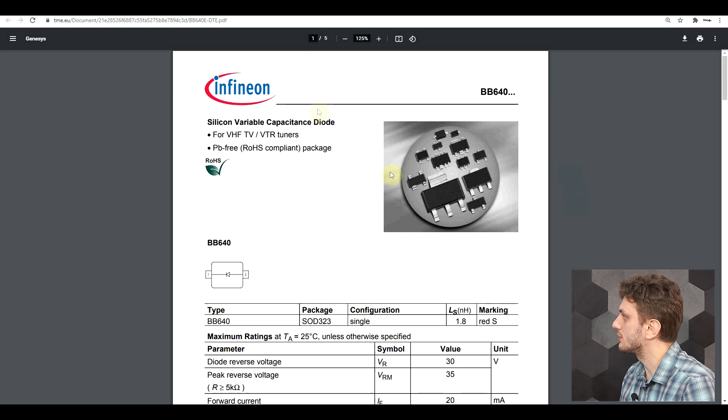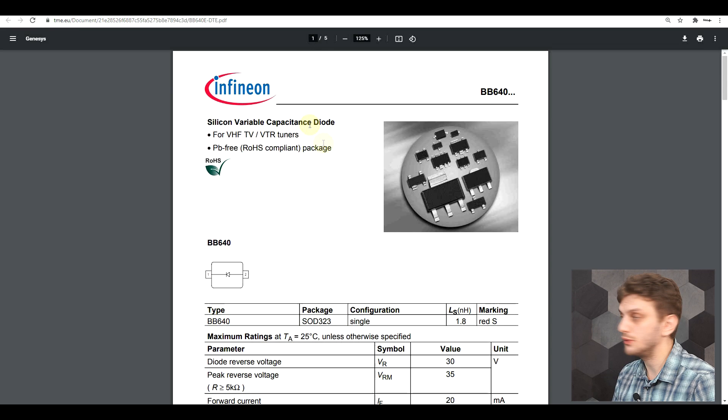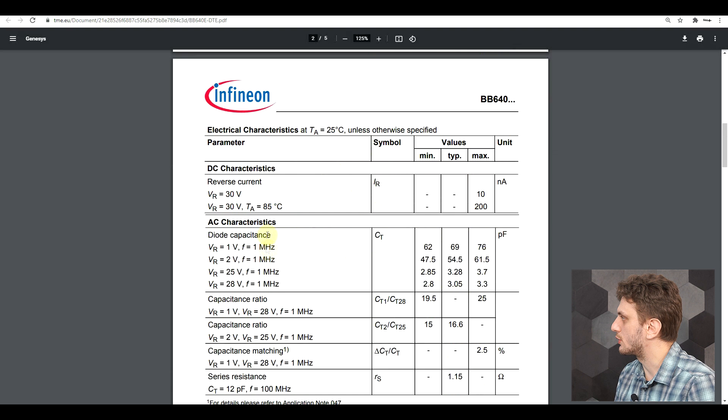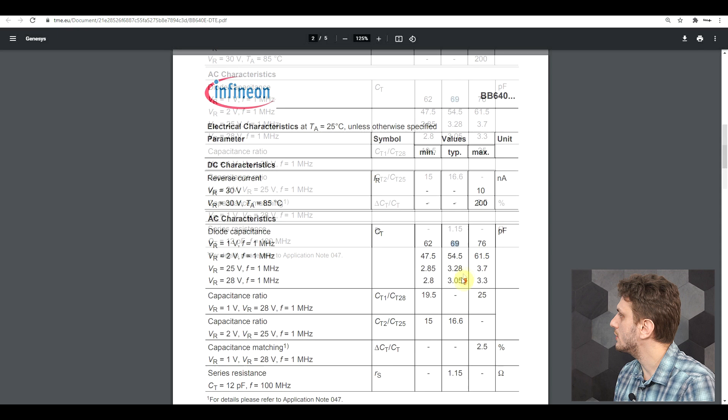Now, if we look into the datasheet of such a component, so what I have here is the datasheet for the BB640 varicap diode, we will see that the capacity is specified for various reverse voltages. So this diode goes from around 69 pF down to 3 pF. The more negative the voltage applied, the smaller the capacitance, because the further away our conductive regions are.